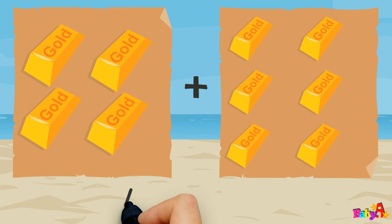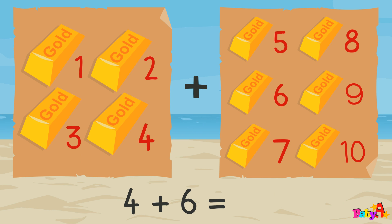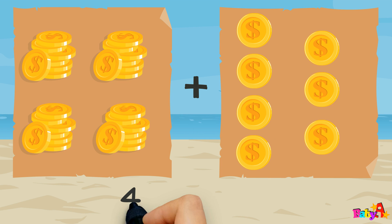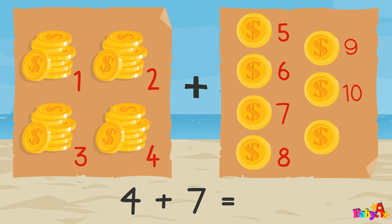4 plus 6 equal 1, 2, 3, 4, 5, 6, 7, 8, 9, 10 — 10. 4 plus 7 equal 1, 2, 3, 4, 5, 6, 7, 8, 9, 10, 11 — 11.